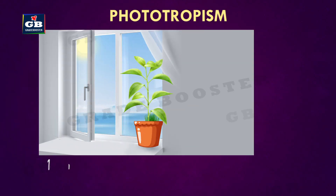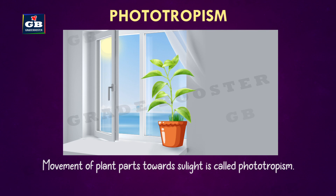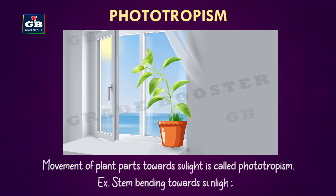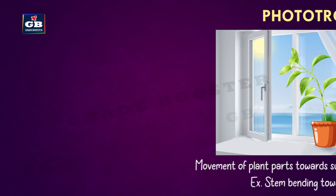The movement of plant parts towards sunlight is called phototropism. For example, stem bending towards sunlight.